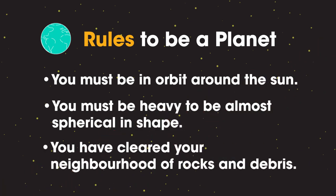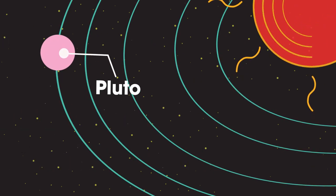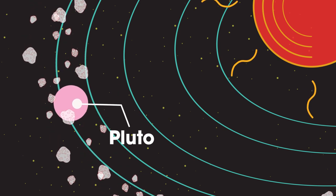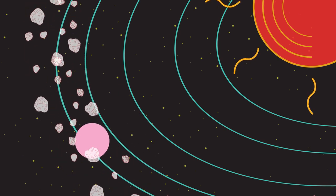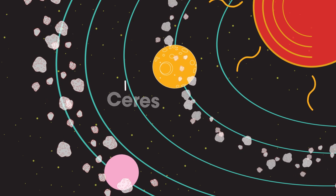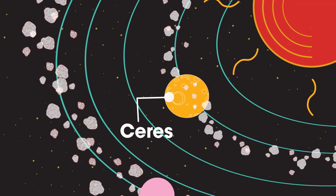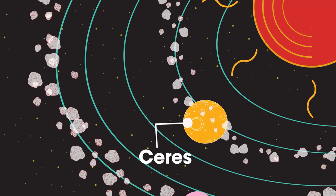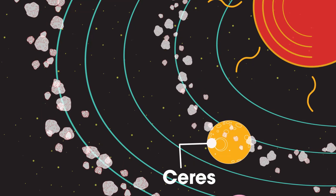Pluto joined other named dwarf planets, which are bodies that orbit a star and have a stable shape, but have not cleared their orbit of other debris. The large asteroid Ceres is another example of a dwarf planet, and others well beyond Pluto are being discovered.